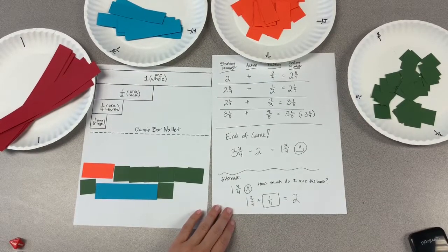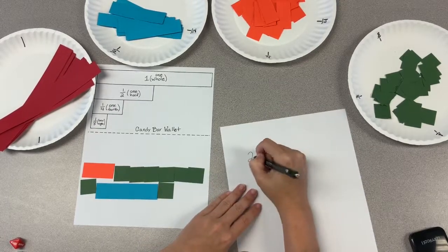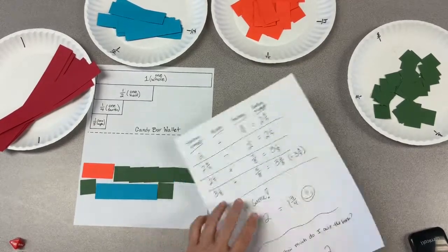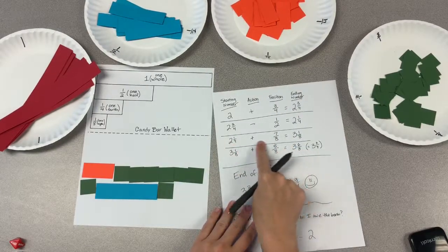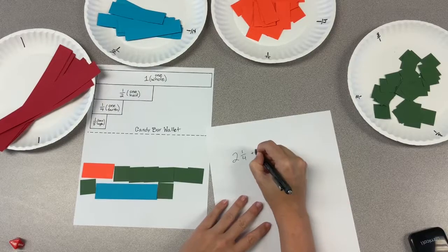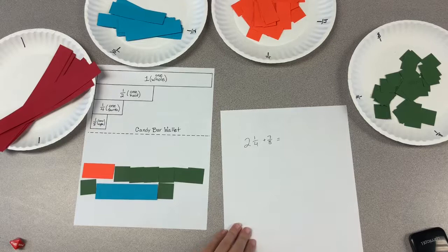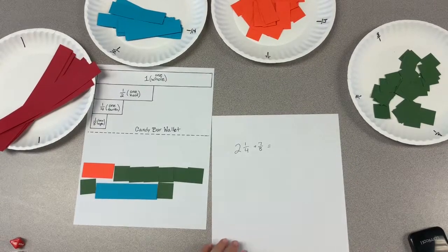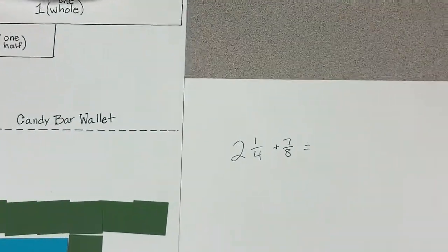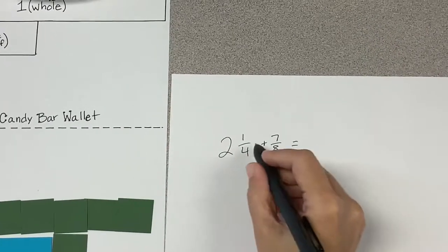Too often in math, students are only taught something like this. I'll go back to one that was common in maybe fourth or fifth grade. Two and one fourth plus seven eighths equals something. Too often students see problems in isolation. When they see problems in isolation, they end up doing something like this.